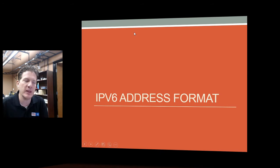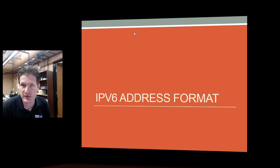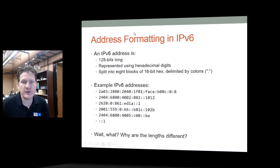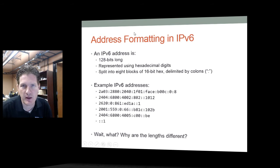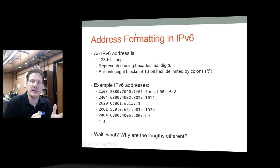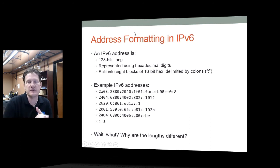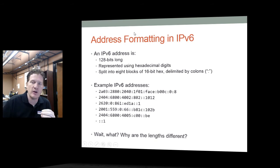Before we do any of that, let's take a deeper look at the IPv6 address format. The address format is 128 bits long and represented using all hexadecimal — the number would be too long to represent in binary. We represent it in hexadecimal, separated into eight blocks of 16-bit hexadecimal characters separated by colons.